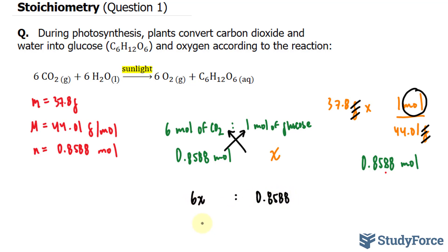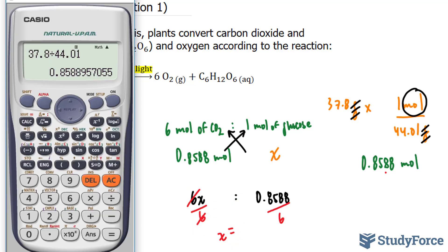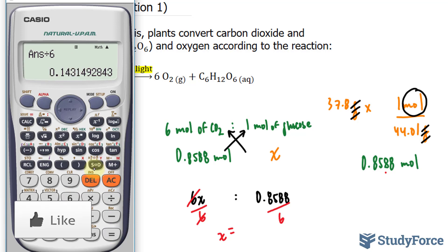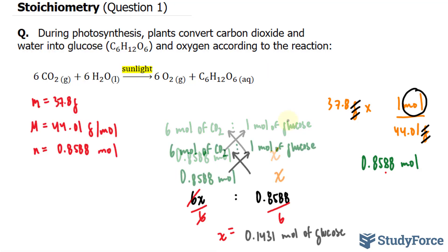Solving for X, I divide both sides by 6. Watch this. The 6 cancels out, leaving us with X is equal to this number divided by 6. And we end up with 0.1431. I'll write that over here, where I have N is equal to 0.1431 moles.